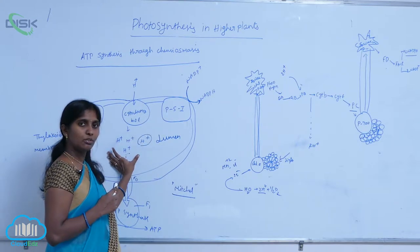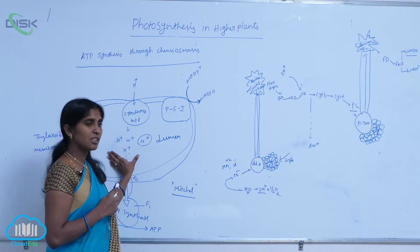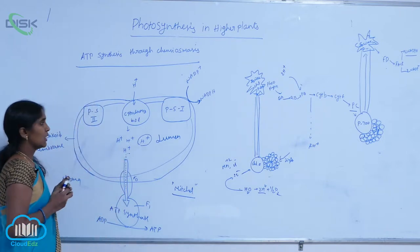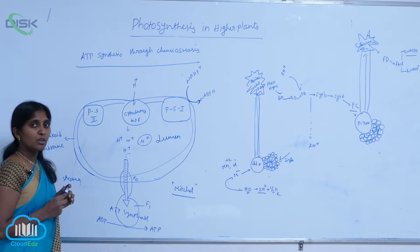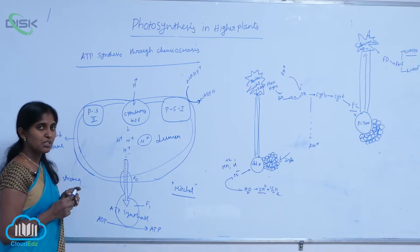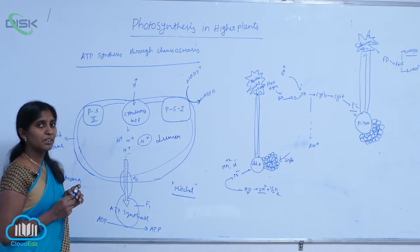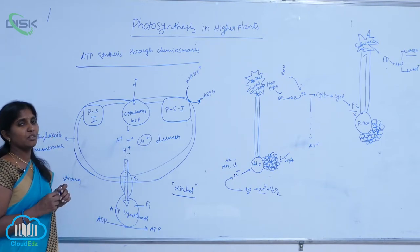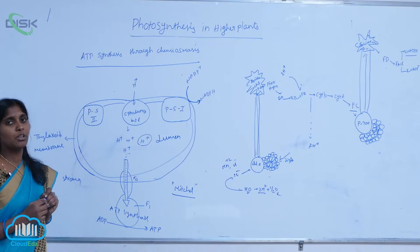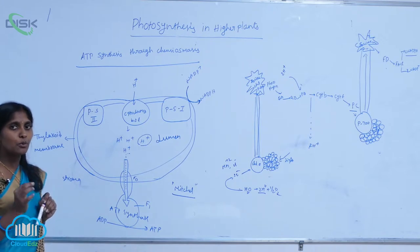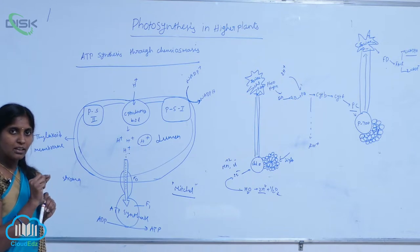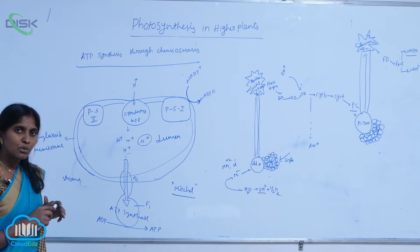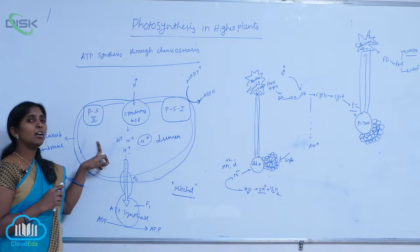The concentration of protons is increasing in the lumen. During non-cyclic photophosphorylation, water molecule splitting occurs. From one water molecule, two electrons and two protons are released. The electrons are carried among the electron carriers, but the protons are accumulated in the lumen.